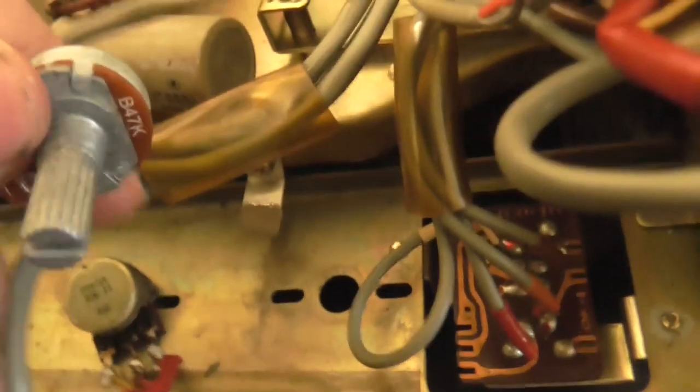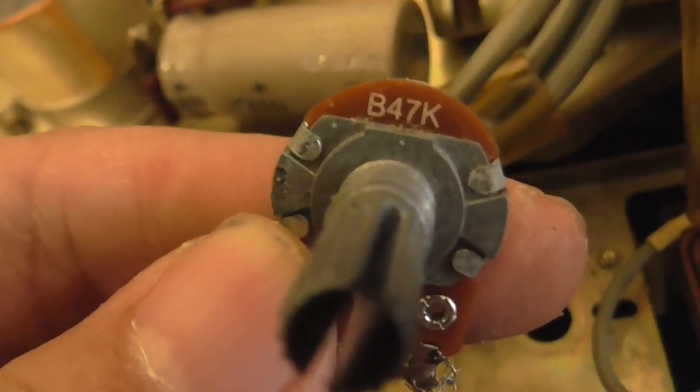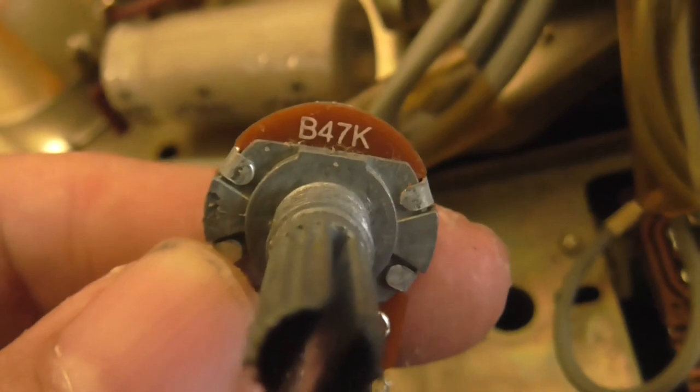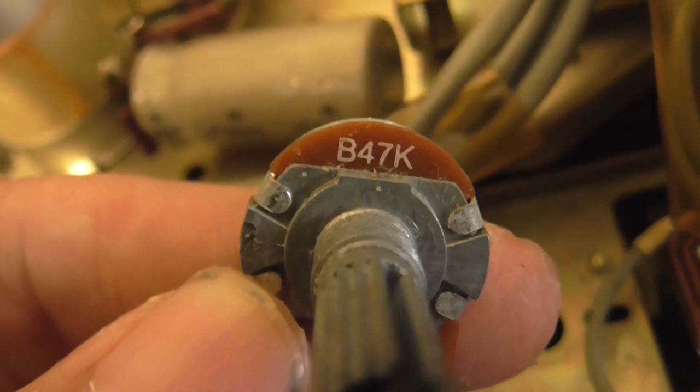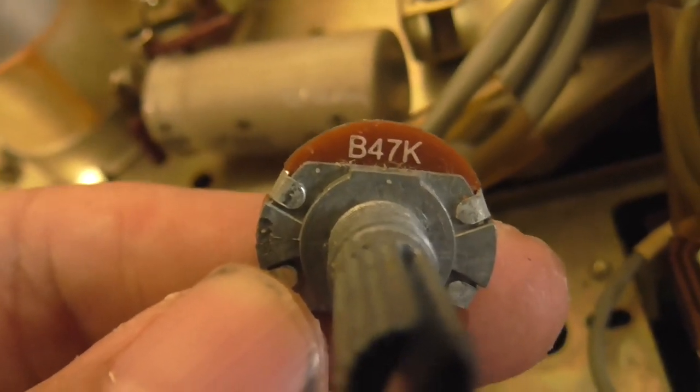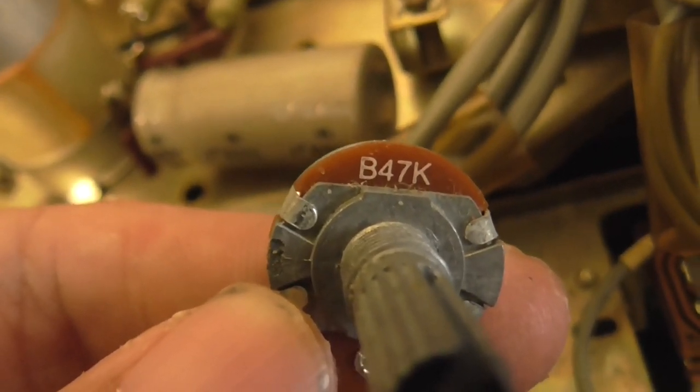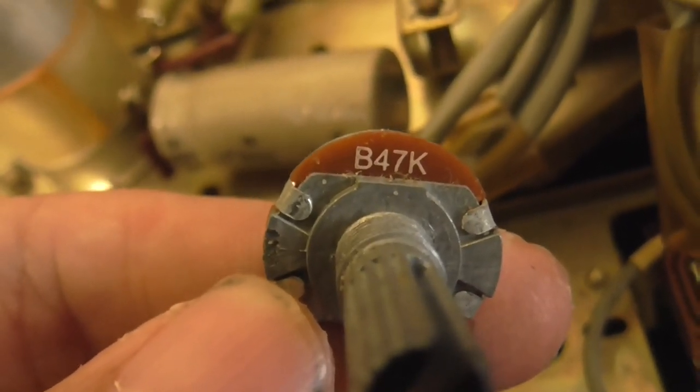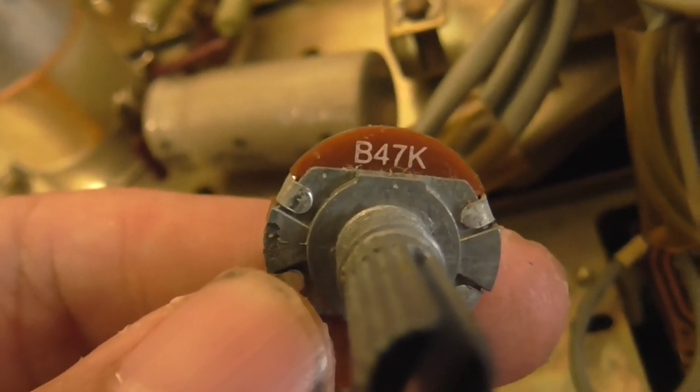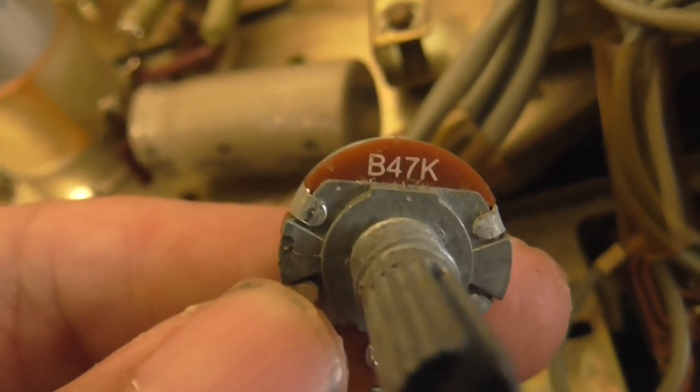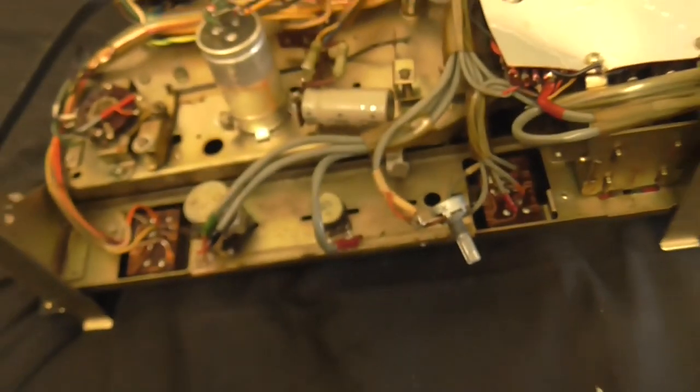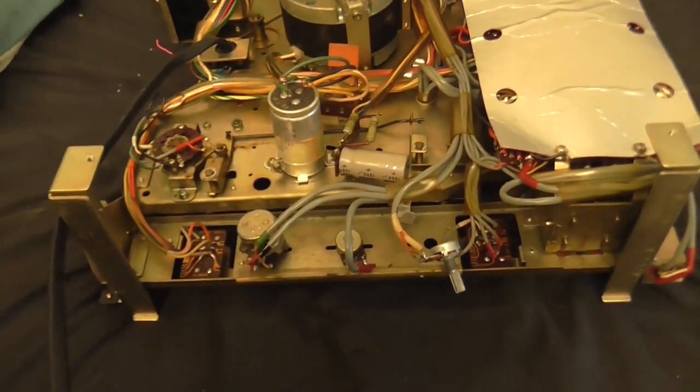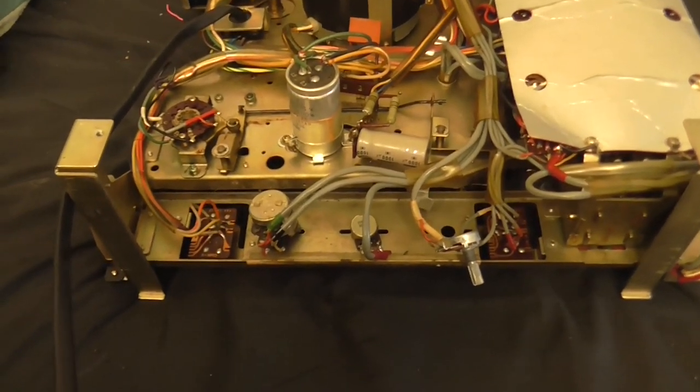Whereas this one, I'll have to take this out to show you. Well, for starters, it's the wrong value. It's 47 and it should be 20, but that's not really going to matter too much. It says B47K. That B means that it's a linear potentiometer. That'll explain the weird volume. I don't know if the previous owner did that or if I did that at some point.